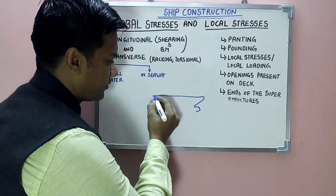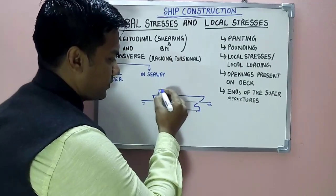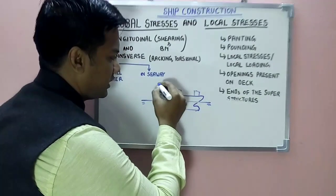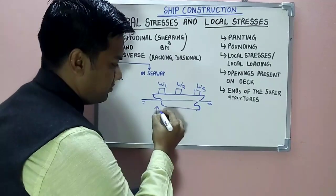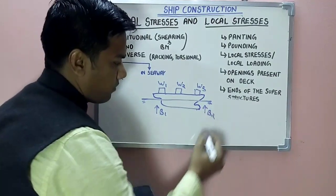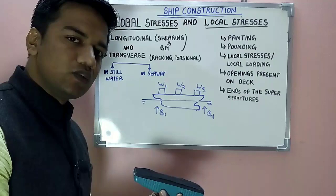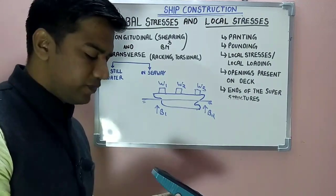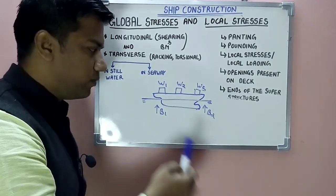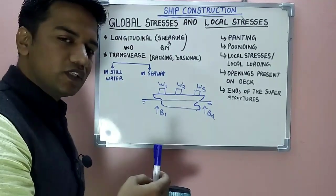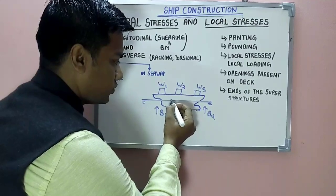Considering this as the ship in still water, the weight distribution is w1, w2, w3 and the buoyancy forces are b1 and b2. Remember: all the weight of the ship acting downwards equals the total buoyancy forces acting upwards, hence the ship is floating. So w1 plus w2 plus w3 equals b1 plus b2. Now let's consider what shearing forces will be acting at a point of the ship.